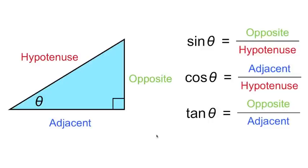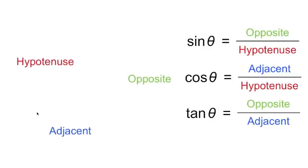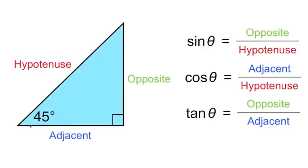Now let's set that angle theta equal to 45 degrees. Here we'll use this triangle to calculate the sine, cosine, and tangent of 45 degrees.